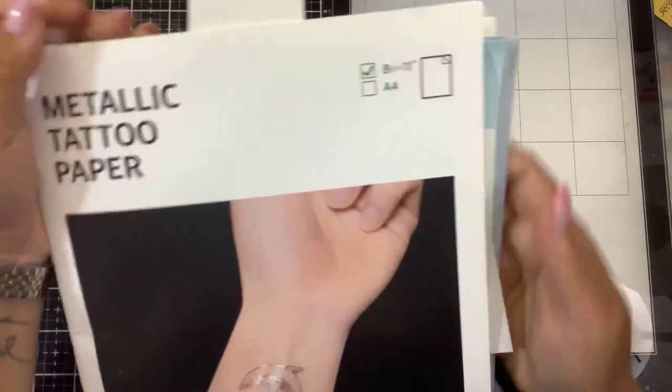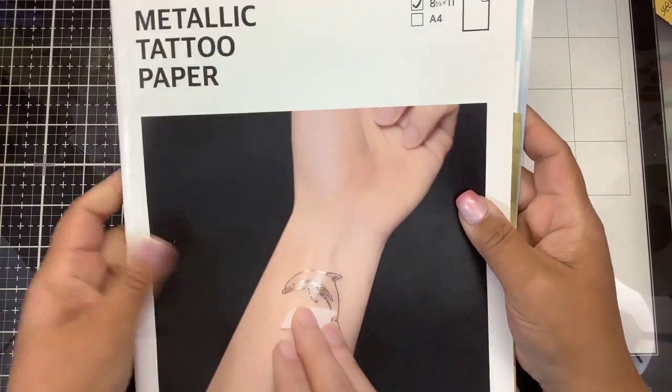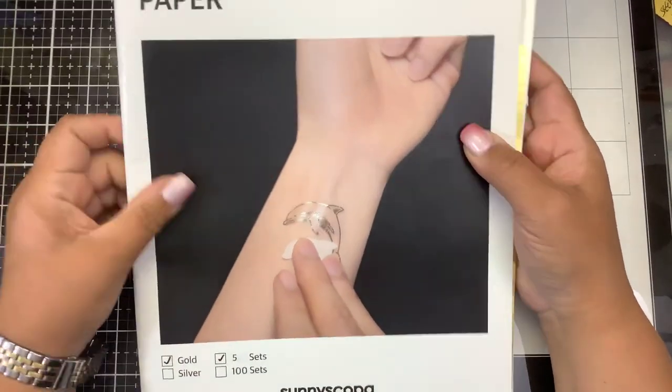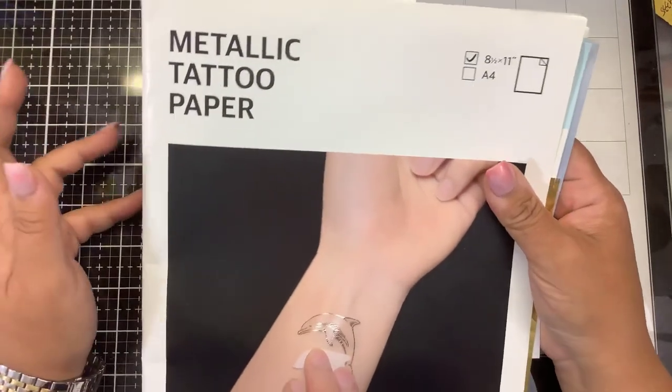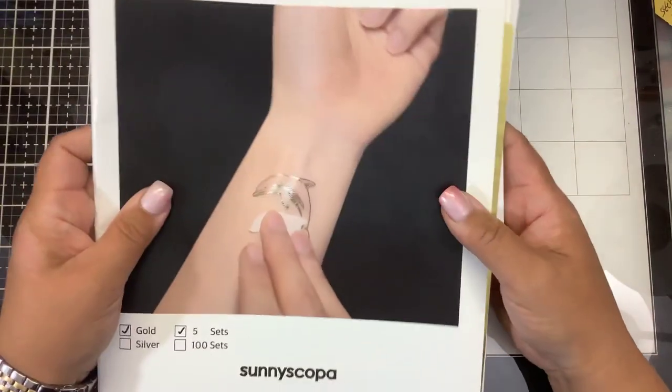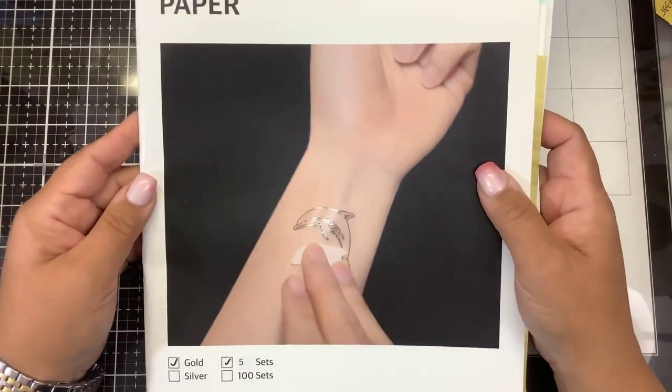Hi guys, it's Nancy. Welcome back to my channel. I had a couple of you ask me about this Sunny Scopa Metallic Tattoo Paper, which is basically a water slide paper on how to make your own foiled tattoos.